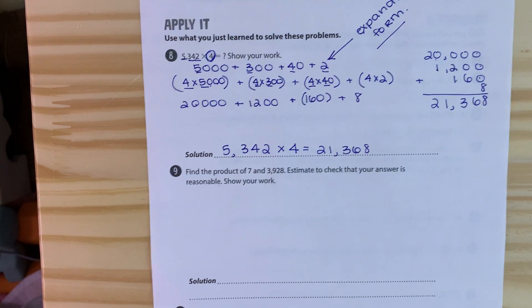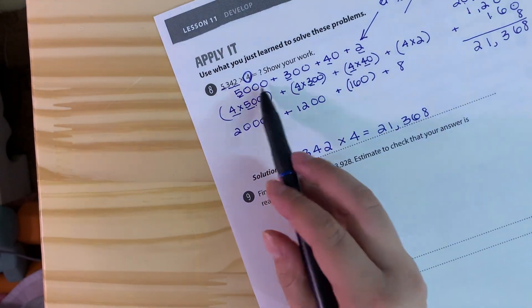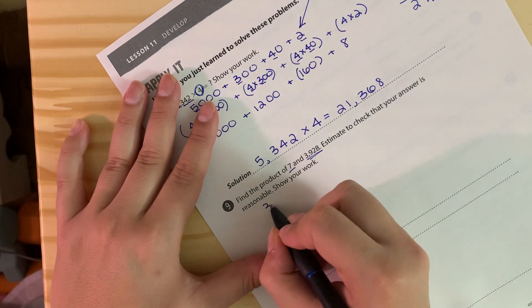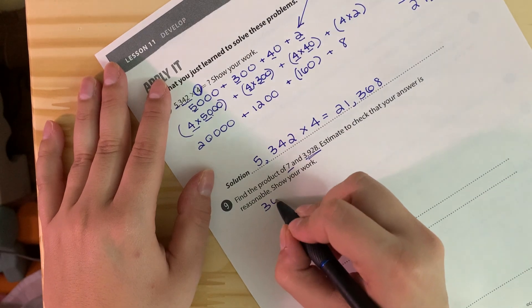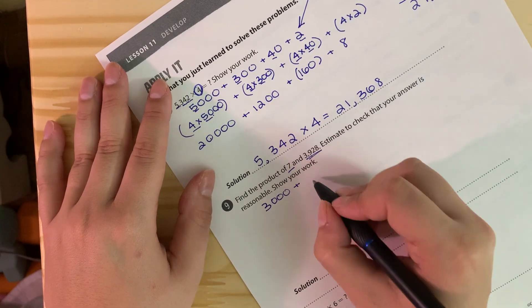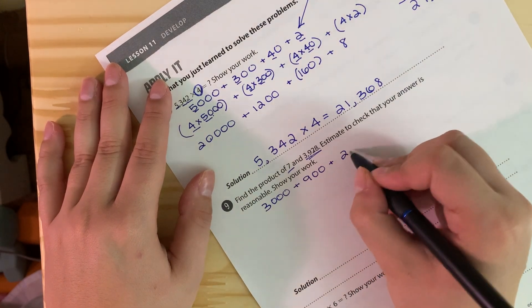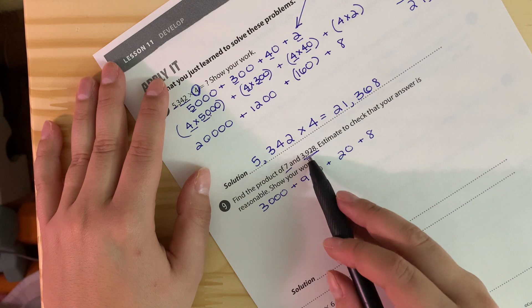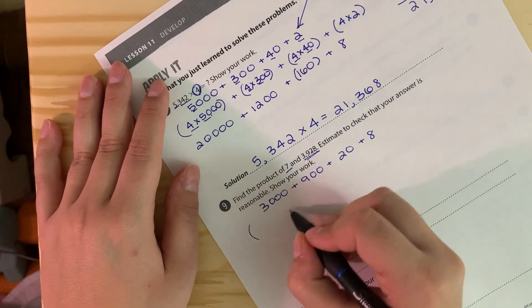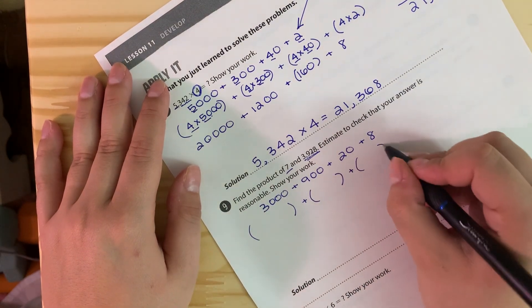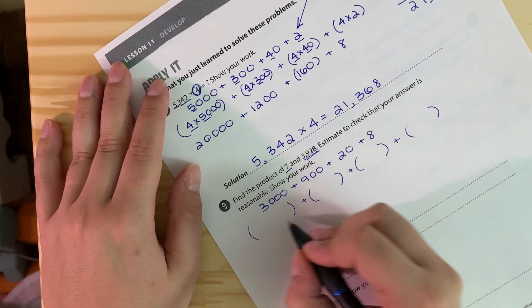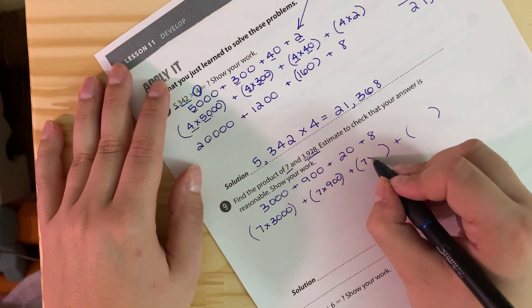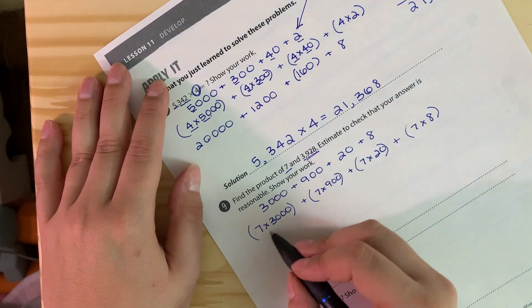We're going to use the same strategy to solve number nine, just to get some practice with the expanded form. So we have 3,928 times 7. So again I'm going to break apart my 3,928 into place value. So I have 3,000 plus 900 plus 20 plus 8, because I have an 8 in the ones, a 2 in the tens, a 9 in the hundreds, and a 3 in the thousands. So now that I have my number broken apart by place value, I'm going to make my parentheses so I can multiply each of these numbers by 7.